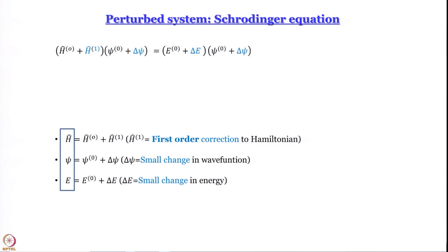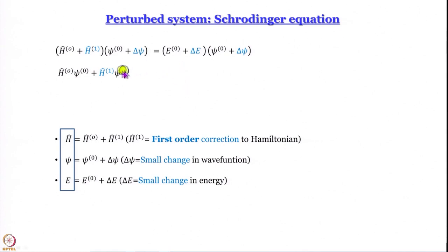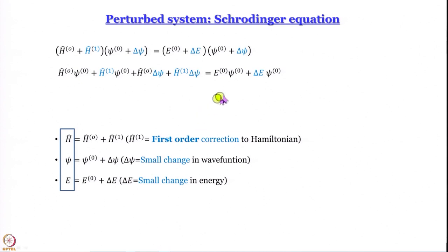Now let us open the brackets. We are going to have four terms on the left and four terms on the right — eight terms total. Many of these will vanish, and we will have a beautiful expression for δE. Expanding: Ĥ⁽⁰⁾ψ⁽⁰⁾ + Ĥ⁽¹⁾ψ⁽⁰⁾ + Ĥ⁽⁰⁾δψ + Ĥ⁽¹⁾δψ on the left; E⁽⁰⁾ψ⁽⁰⁾ + δEψ⁽⁰⁾ + E⁽⁰⁾δψ + δE·δψ on the right. Now let us see how many of these eight terms become zero.